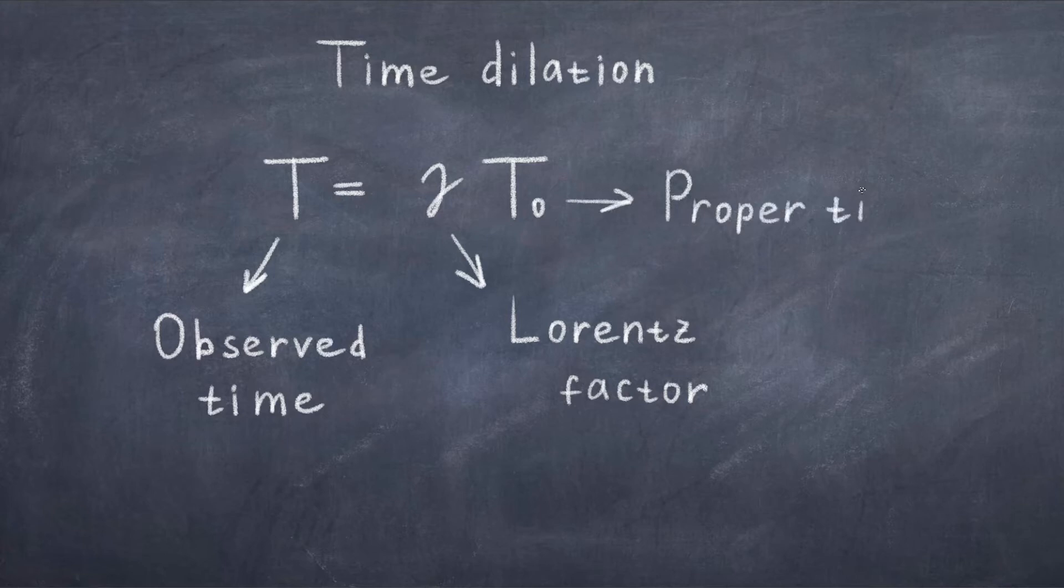Such a concept is rather unintuitive, but nevertheless correct to the best of our knowledge, as the theory of relativity has been studied and tested in great detail. One can combine these two concepts to try to understand why cosmic muons can reach us.